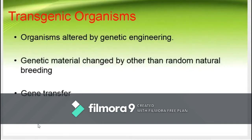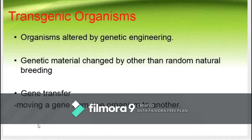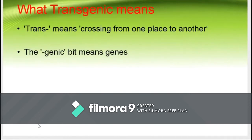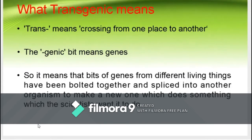Transgenic organisms are those whose genetic material are changed other than through random natural breeding, through gene transfer — the moving of a gene from one organism to another. The word transgenic comes from 'trans,' meaning crossing from one place to another, and 'genic,' referring to genes. So it means that bits of genes from different living things have been bolted together and spliced into another organism to make a new one that does something the scientists wanted.